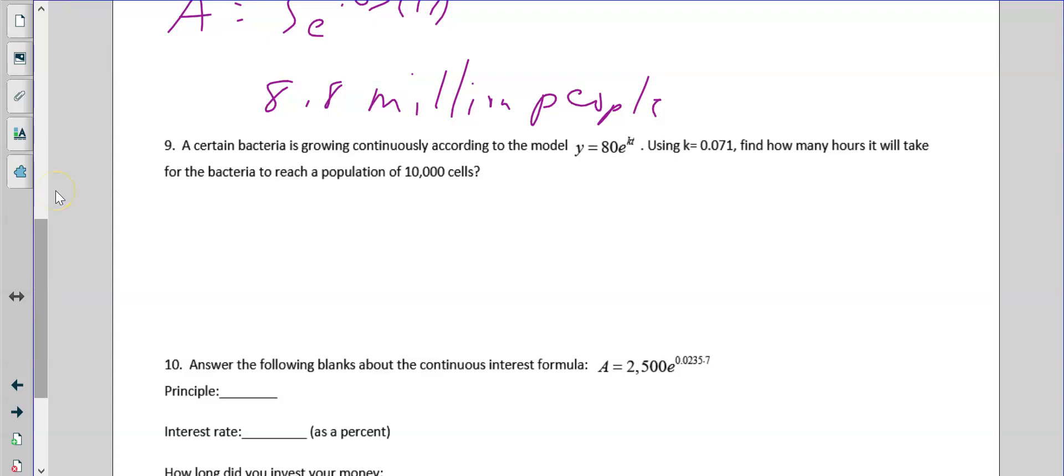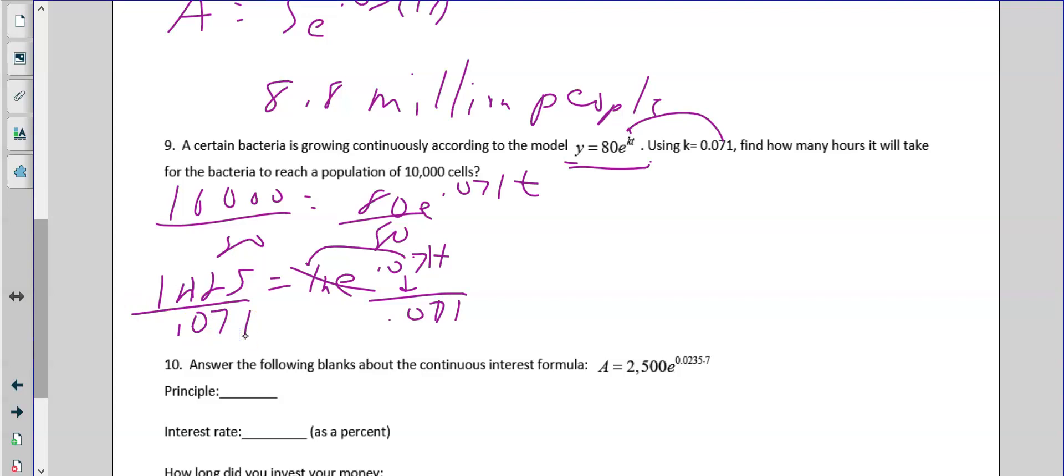Number nine. Certain bacteria is growing continuously with this model right here. Same one we've been using. K is right here. We'll plug that in. How many hours will it take to reach 10,000? So 10,000 equals 80. There's our e for continuously, 0.071 t. Same procedure. First get rid of the 80, so divide by 80. So that's 125. E to the 0.071 t. Again, we'll ln both sides. That makes this go away. That moves out to the front or just drops down, meaning we're going to divide by 0.071, and that's going to be about 68 hours.